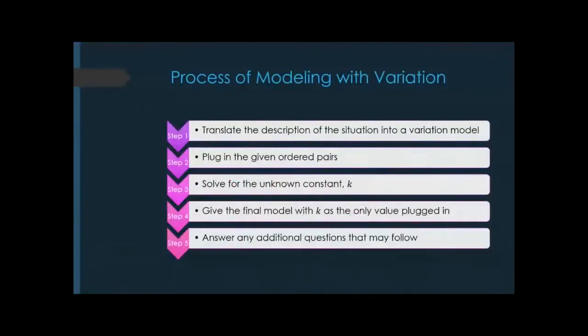When modeling variation, there is a strict, straightforward process. Step one: translate the description of the situation into a variation model — translating the words into mathematics. Step two: plug in any given ordered pairs and solve for the unknown constant k. Step three: rewrite the model using the value for k while leaving all other variables as variables. Step four: that's your mathematical model, and then you can answer any follow-up questions.